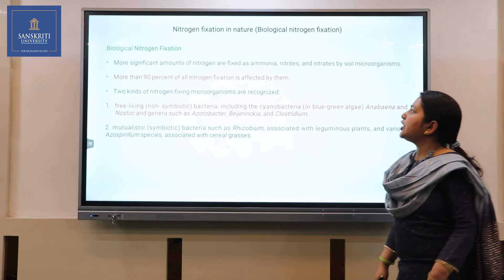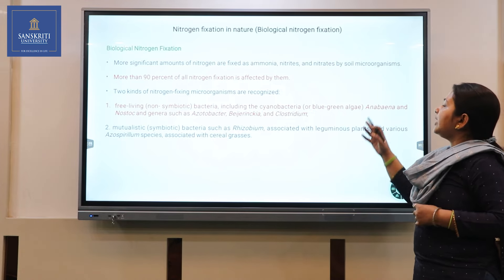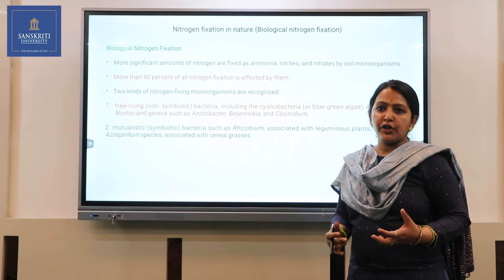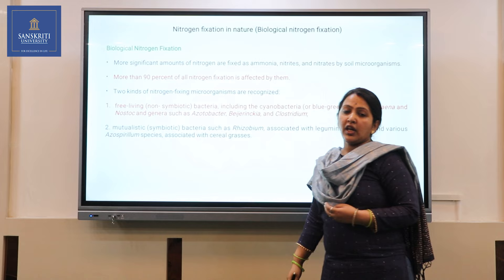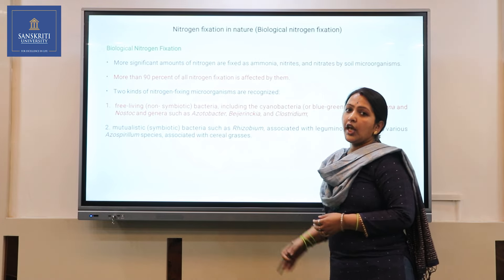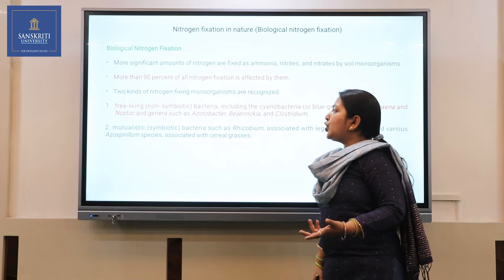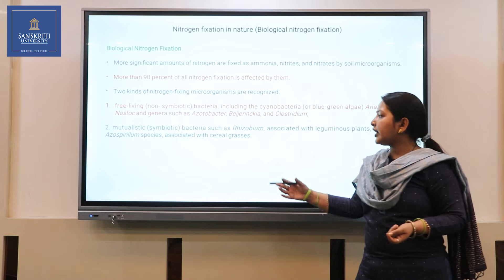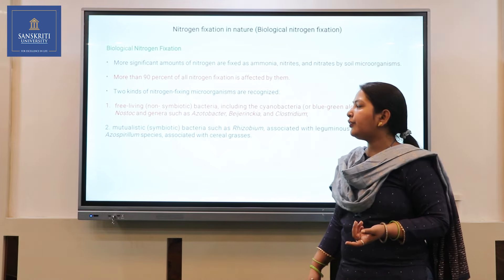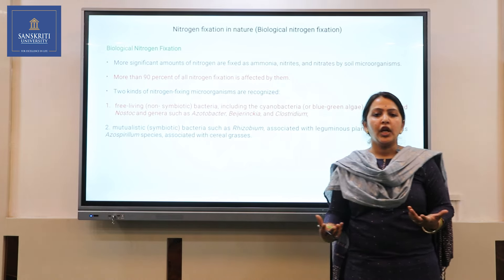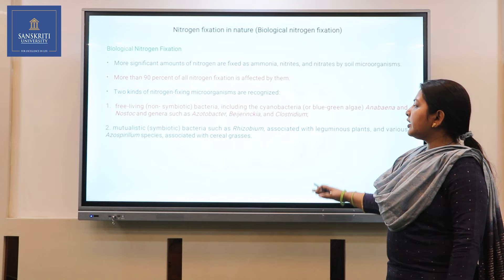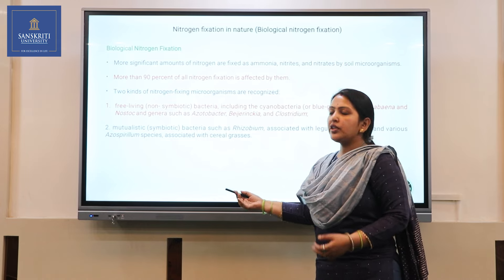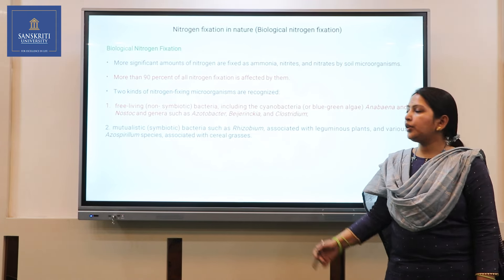The second type is biological nitrogen fixation. The major amount of nitrogen found in the atmosphere is fixed by this process — about 90% of nitrogen is fixed biologically. It can occur with the help of two types of bacteria: free-living and mutualistic or symbiotic. The symbiotic type occurs with the help of bacteria which show close association with root nodules.